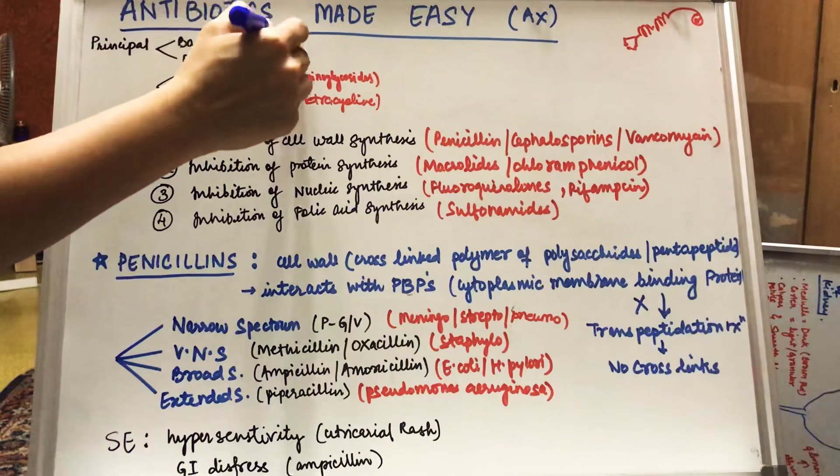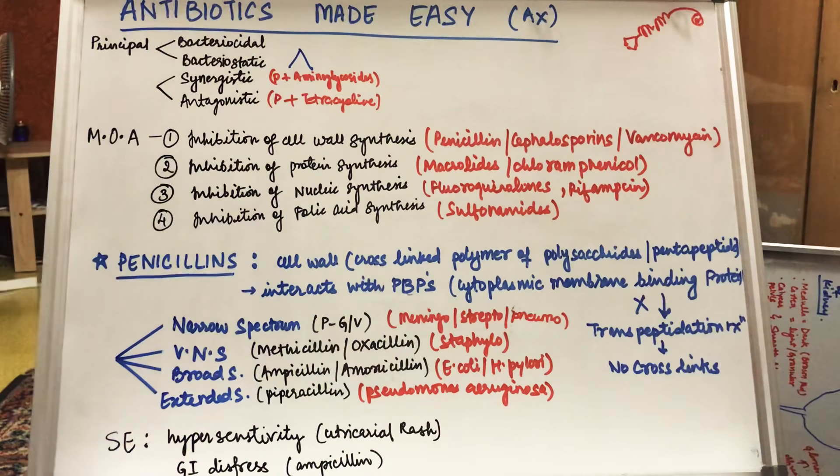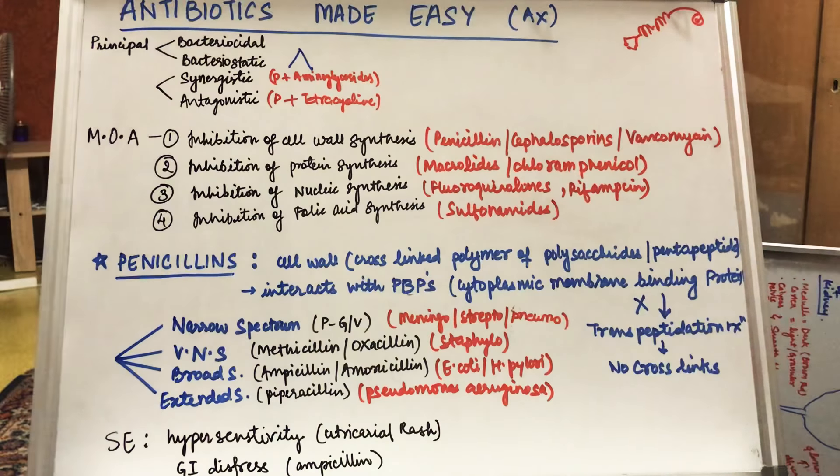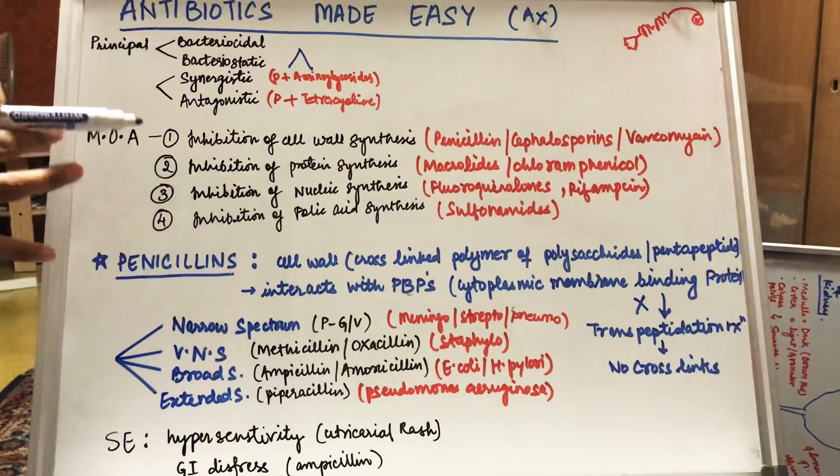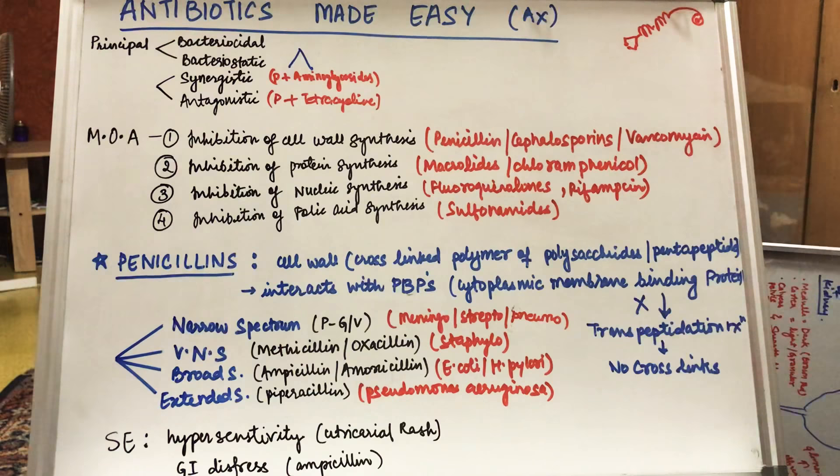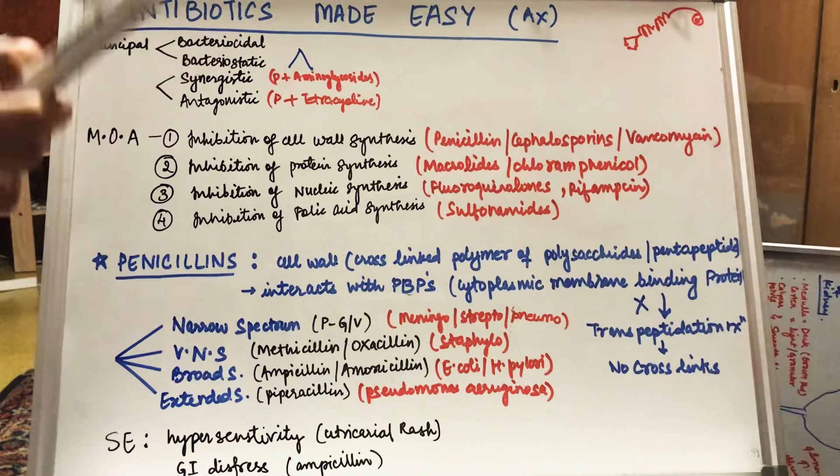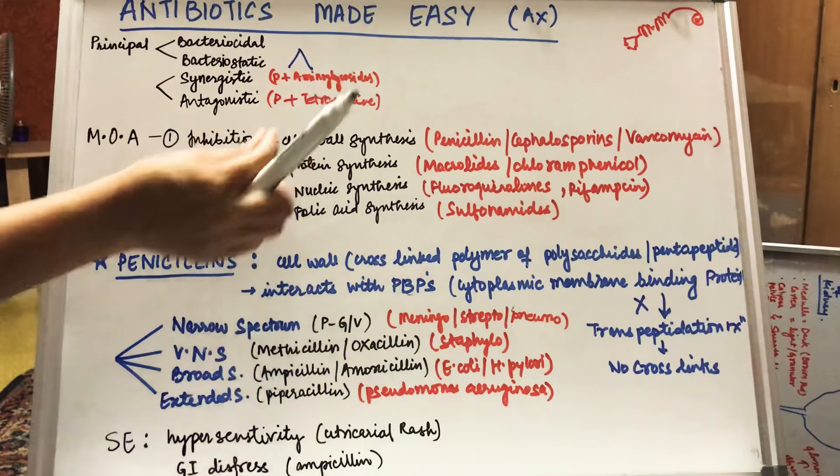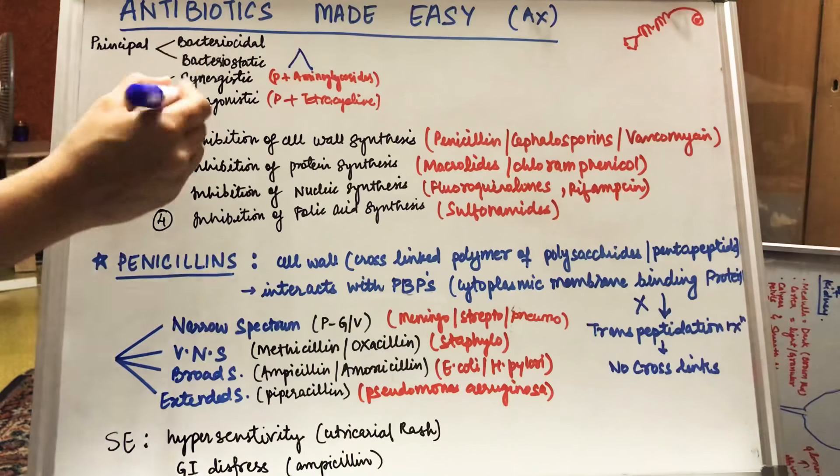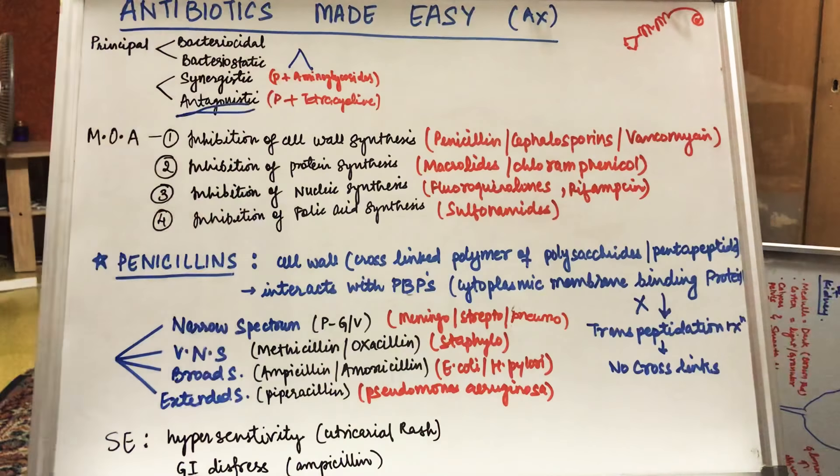The fourth principle is antagonistic. For example, we are using penicillin and tetracycline together but we are not getting the desired effect. The desired effect is less than the individual effect of penicillin and tetracycline. We call this principle antagonistic.